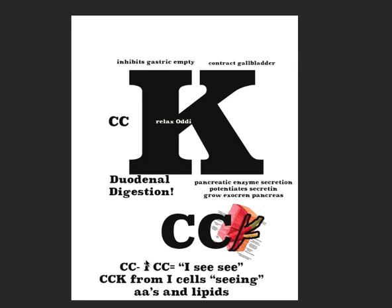One last little mnemonic for CCK: ICC. This reminds you that I cells — that is, they detect amino acids and lipids in the duodenal space — and they effectively release CCK into the bloodstream where it can have its effects. The two C's of CCK remind you of the two biomolecule classes it has seen. GIP is the one that sees glucose, so it's best to remember that by difference, which we'll look at in a second.